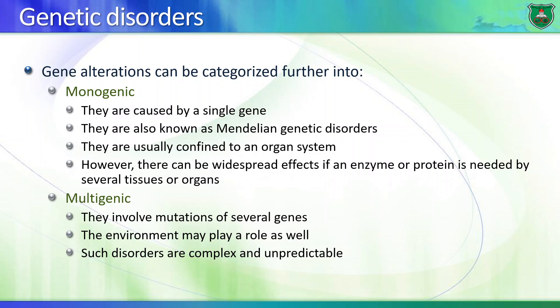In general, genetic disorders can be categorized into two types: monogenic and multigenic disorders. Monogenic disorders are the ones that follow the Mendelian laws — they are caused by a single gene and are usually confined to an organ system, unless the gene is important for multiple organs like enzymes, in which case multiple organs can be involved. Multigenic disorders will be the topic of our next lecture. They involve multiple mutated genes, the environment plays an important role, and as a result these disorders are complex, unpredictable, and can be gender-based.